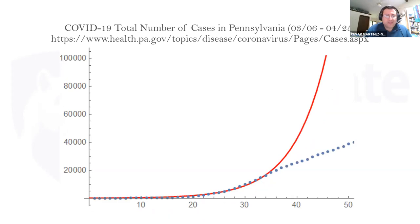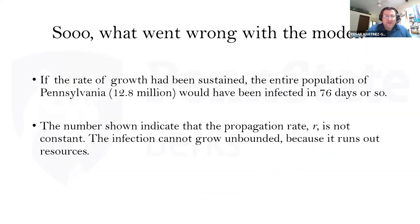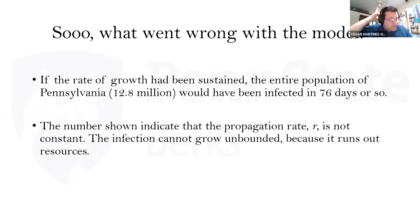Past March 6th, my little model curve just keeps going, but the actual cases in Pennsylvania don't — they start going in the opposite direction. What went wrong with this model? It's a very simple model. If the propagation rate were constant, all Pennsylvanians — 12.8 million — would have been infected in about 76 days. But this propagation rate is not constant, and the number of infections cannot grow unbounded because you can only have so many people to infect at any one time. Eventually it runs out of resources.